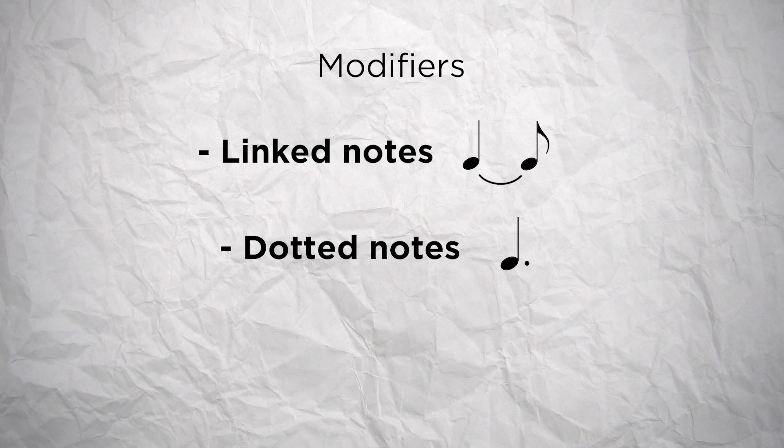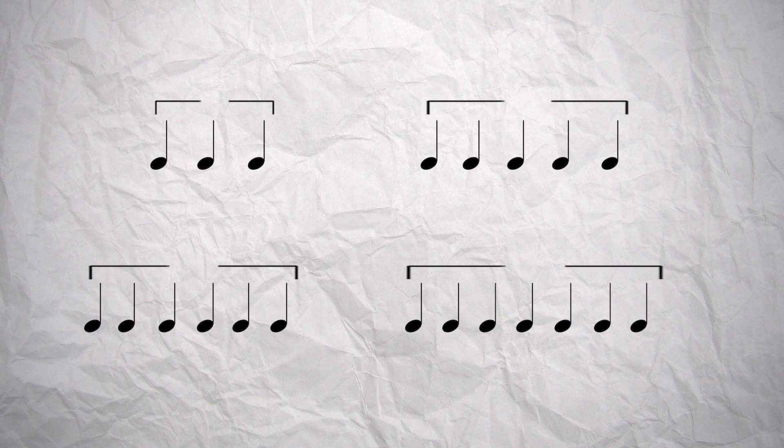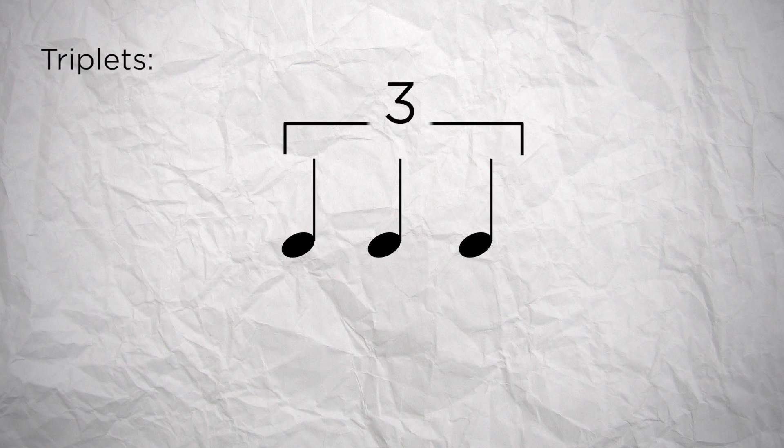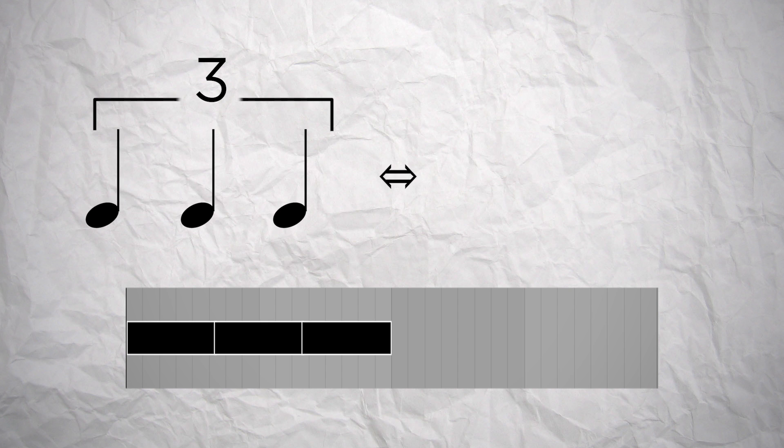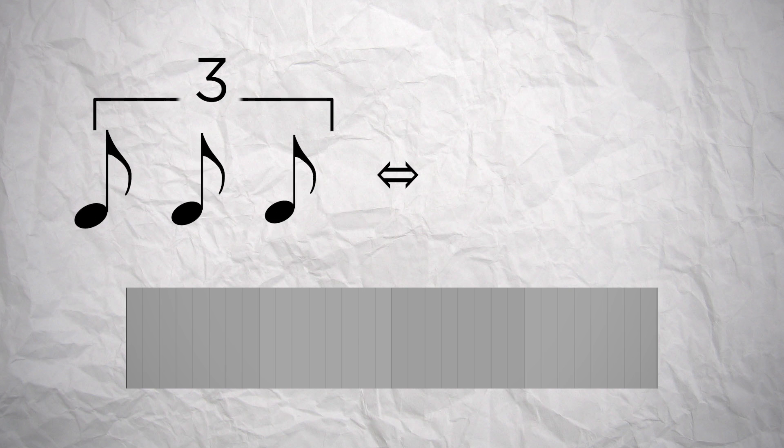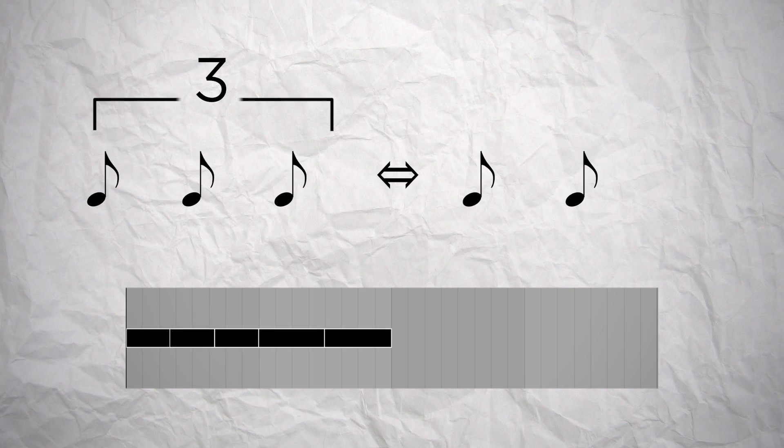And then a third way we can modify the time value of a note are tuplets. If we can divide the length of a note by 2 or by 4, tuplets are here to divide them by other odd numbers. They are noted as a group of notes, linked by a bracket, with a number above that indicates the ratio of the division. There are different kinds of tuplets. There are triplets that divide length into 3 equal parts. Triplets on quarter notes, for example, are 3 notes that will take the same length than 2 quarter notes. And triplets on eighth notes are 3 notes that will take the same length that 2 eighth notes. Here is how these triplets sound like.